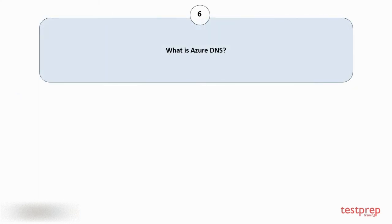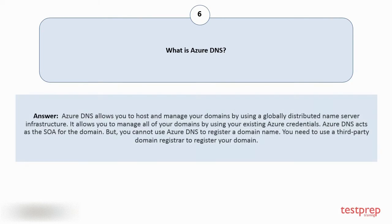Question number six: what is Azure DNS? Your answer is: Azure DNS allows you to host and manage your domains by using a globally distributed name server infrastructure. It allows you to manage all of your domains by using your existing Azure credentials. Azure DNS acts as the SOA for the domain. However, you cannot use Azure DNS to register a domain name — you need to use a third-party domain registrar to register your domain.